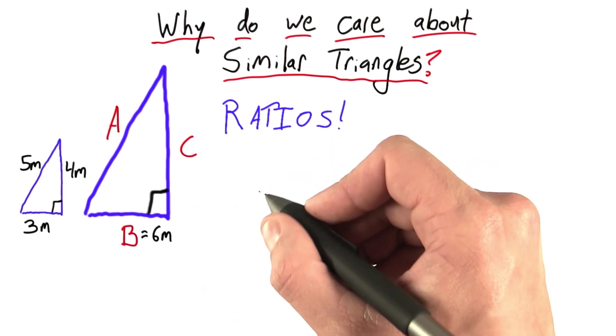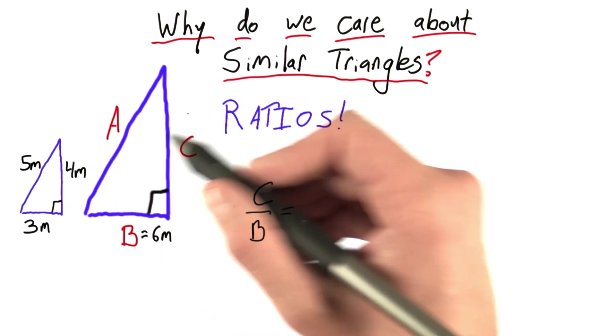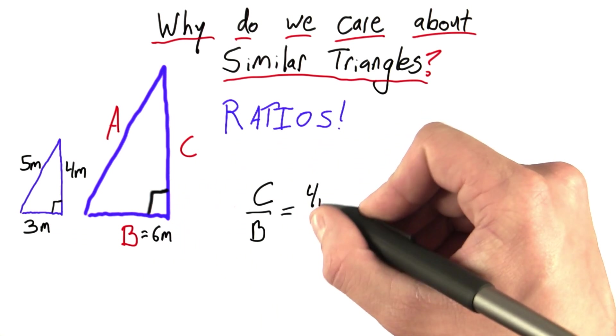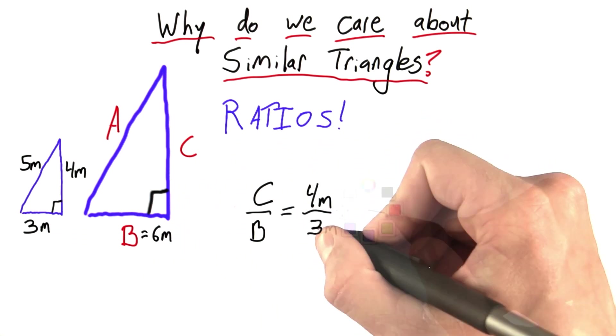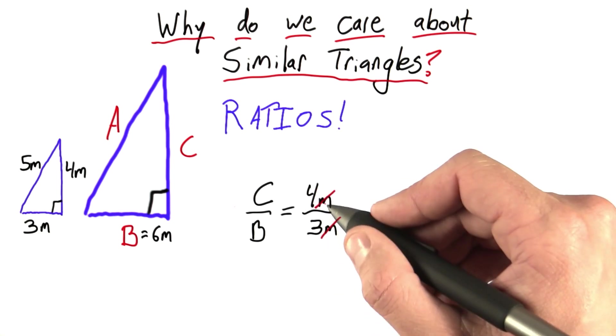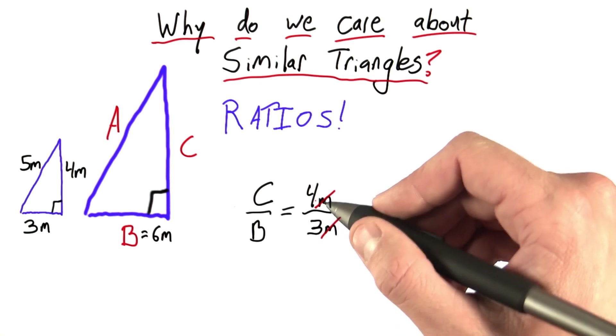Because I know that C over big B has to equal, well, the corresponding sides. 4 over 3. More precisely, 4 meters over 3 meters. And notice that when we do this, the units cancel out. So it doesn't even matter that we were using meters. We could have been using inches or stadia or furlongs or any unit we'd like.